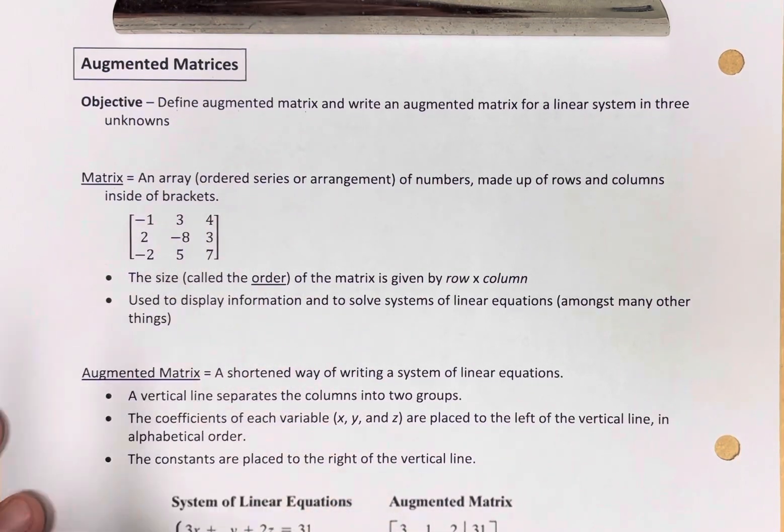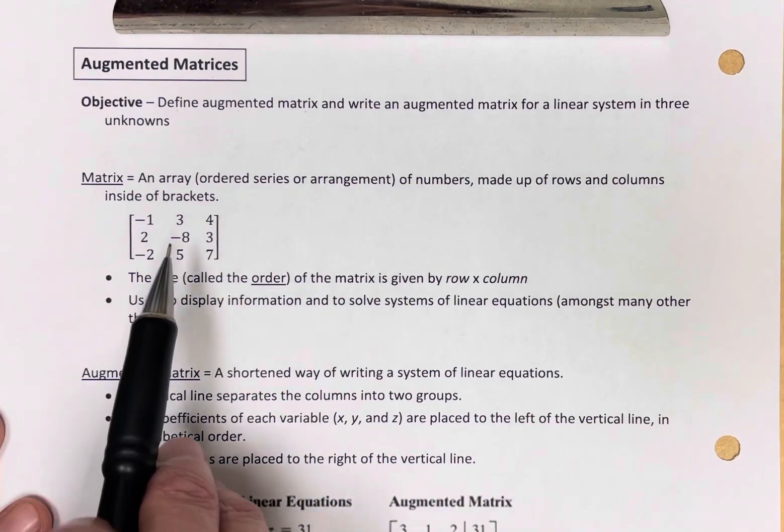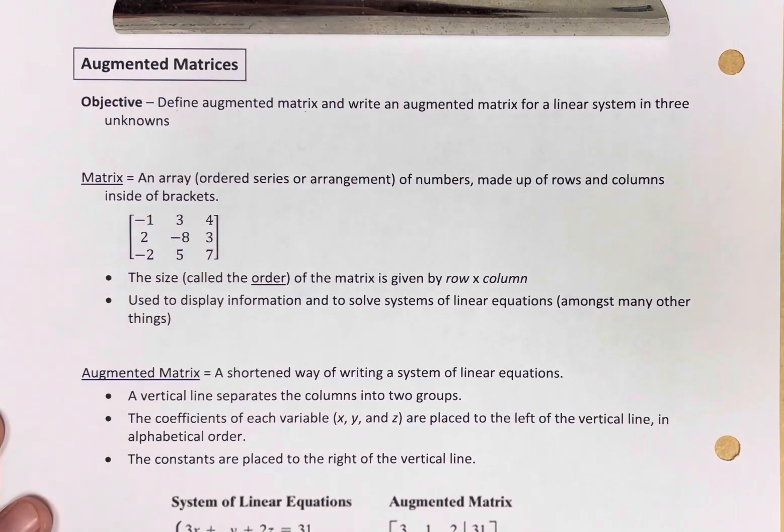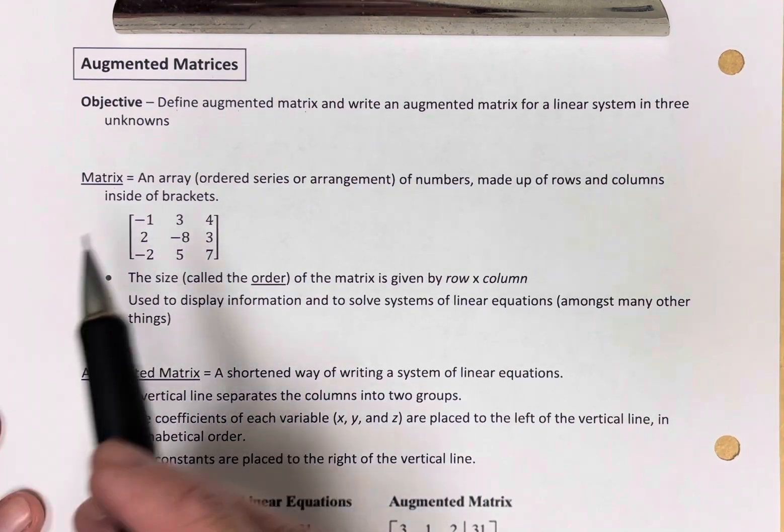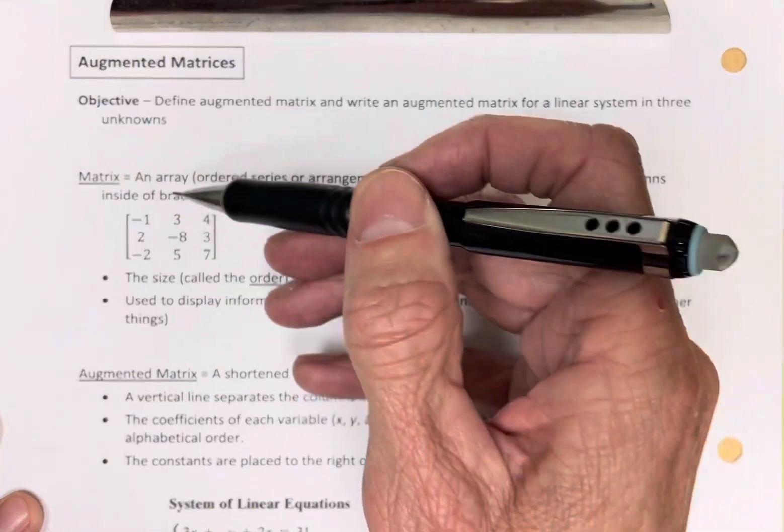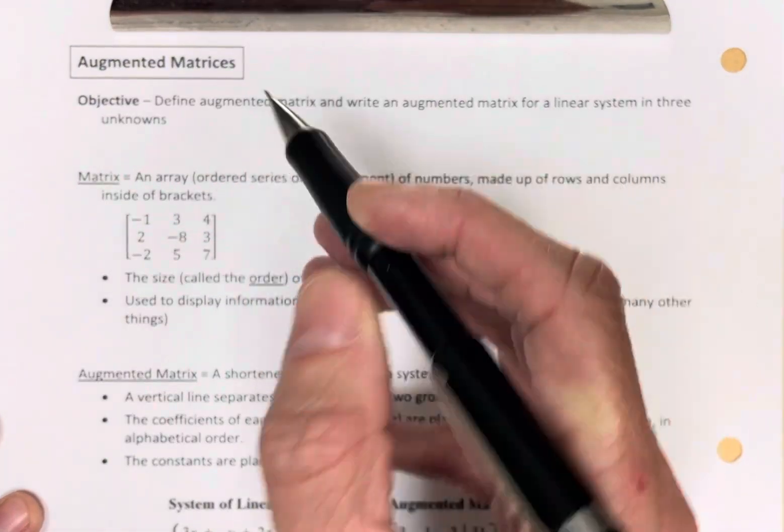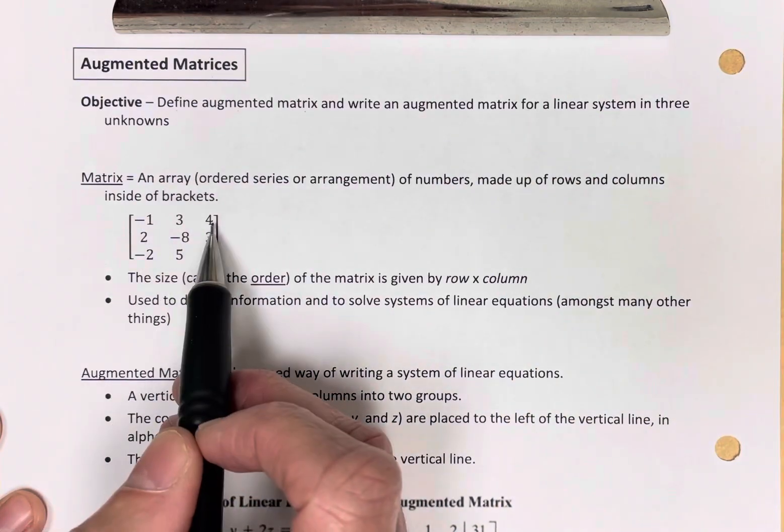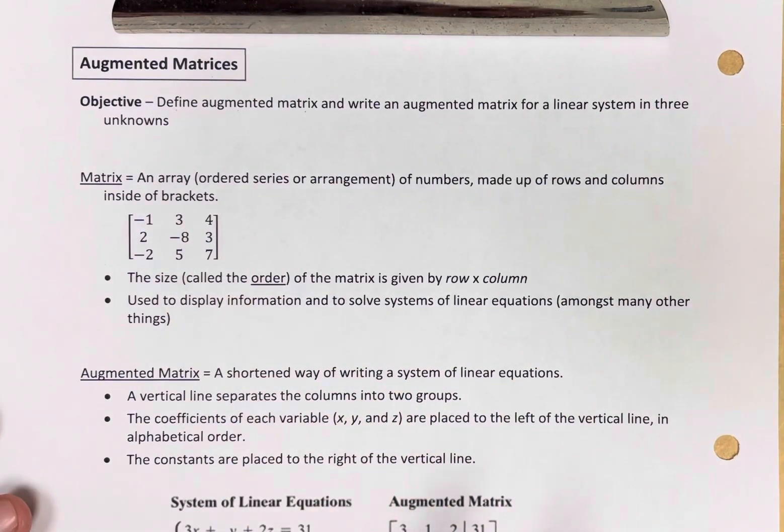Here is a matrix. It's just an ordered arrangement of numbers, and you have rows. In this case, we have three rows, and we have columns. In this case, we have three columns, and they are enclosed inside of square brackets.